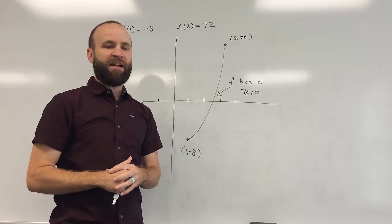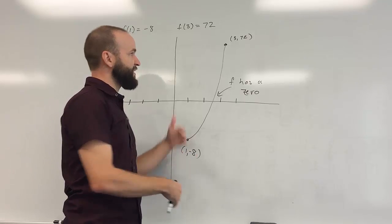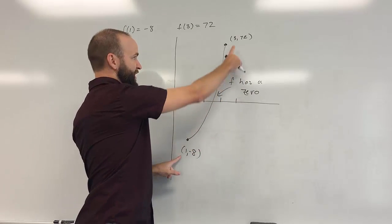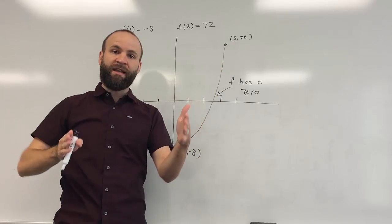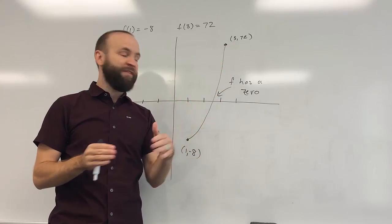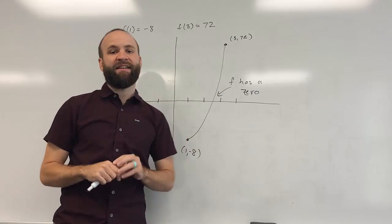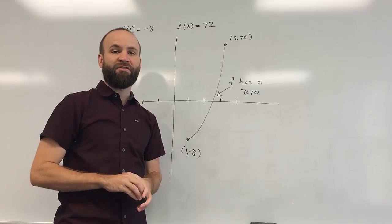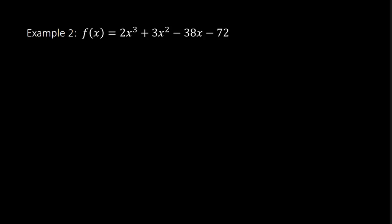That's what the Intermediate Value Theorem tells us. If we find a point below the x-axis and a point above the x-axis, then somewhere between those two x-values — in this case 1 and 3 — there's got to be a point on the x-axis, and that is the location of our zero. Now let's look at a slightly more challenging example, one in which we really might want to apply what we've learned about the Intermediate Value Theorem.